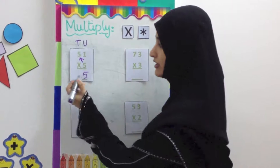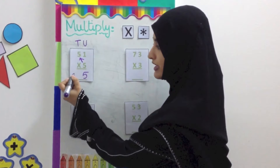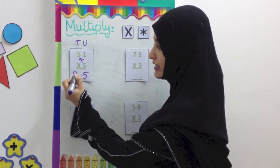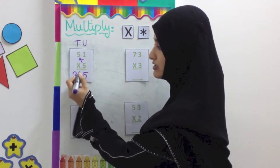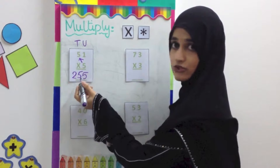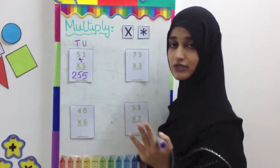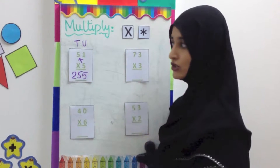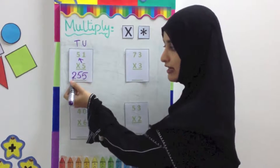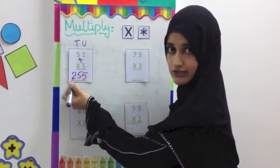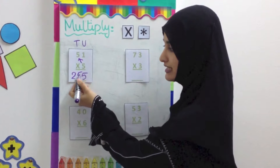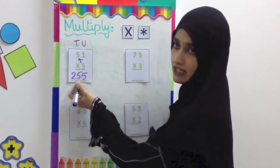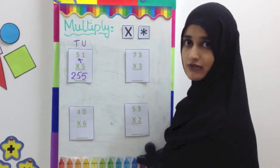Now here you are going to write 25 straight away. The answer is going to have 3 digits. You now have hundreds as well — you have units, tens, and now hundreds.